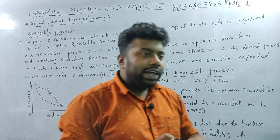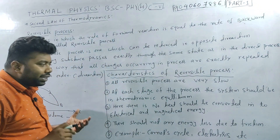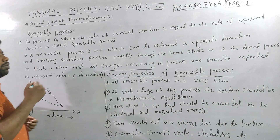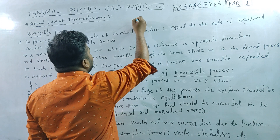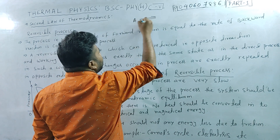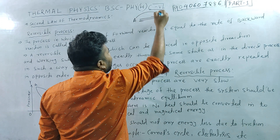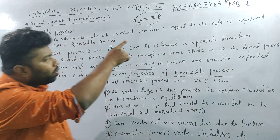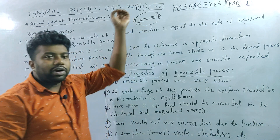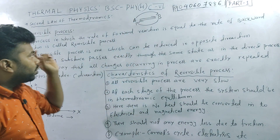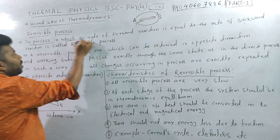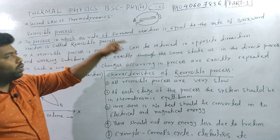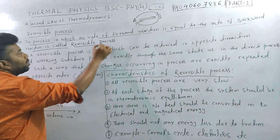We will define the reversible reaction and its properties and characteristics with an example. How do we define the reversible reaction? How do we define the forward direction and the backward direction? This is the process in which the rate of forward reaction is equal to the rate of backward reaction, which is called a reversible process or reversible reaction.